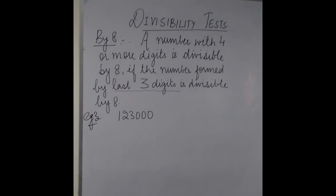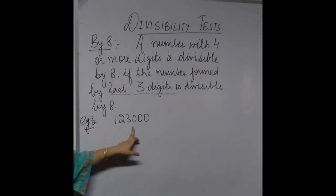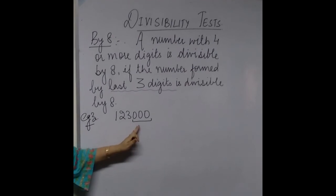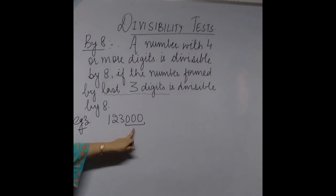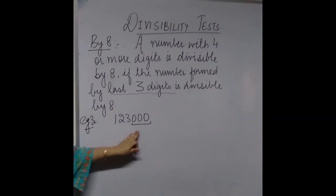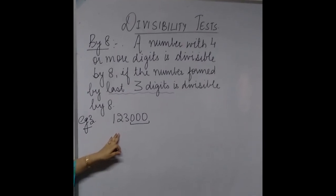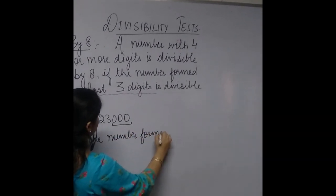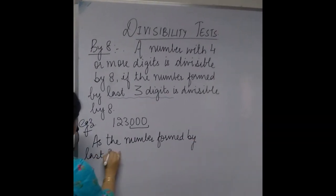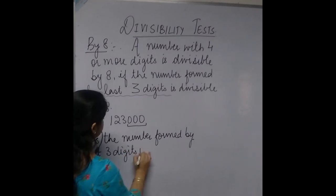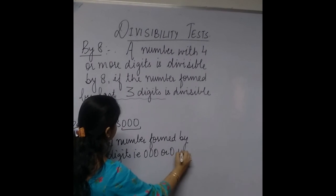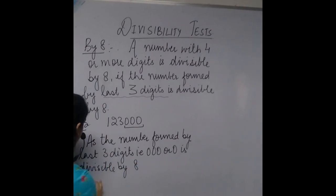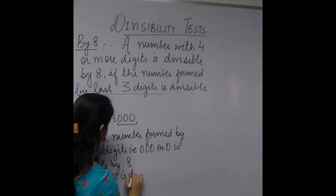In example 3, the number formed by the last three digits is 000. Since 0 is a multiple of every number, 000 is divisible by 8. Therefore, the complete number is divisible by 8. The number formed by the last three digits is 000, which is divisible by 8, therefore the complete number is also divisible by 8.